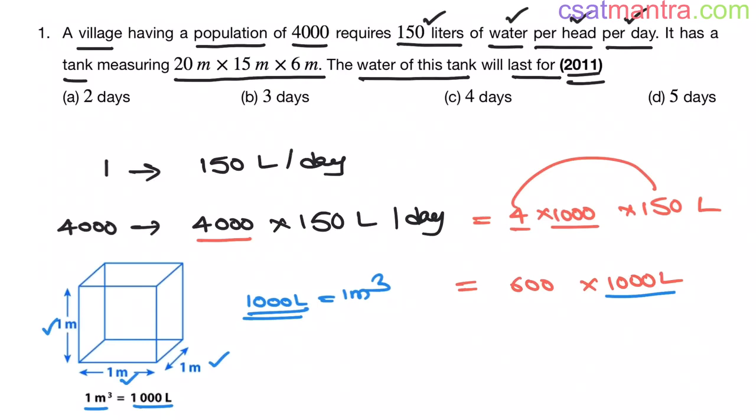1 meter length, 1 meter breadth and 1 meter height, 1000 liters. I have converted liters into meter cube because here tank volume is given in meter cube. Meter into meter into meter, meter cube.